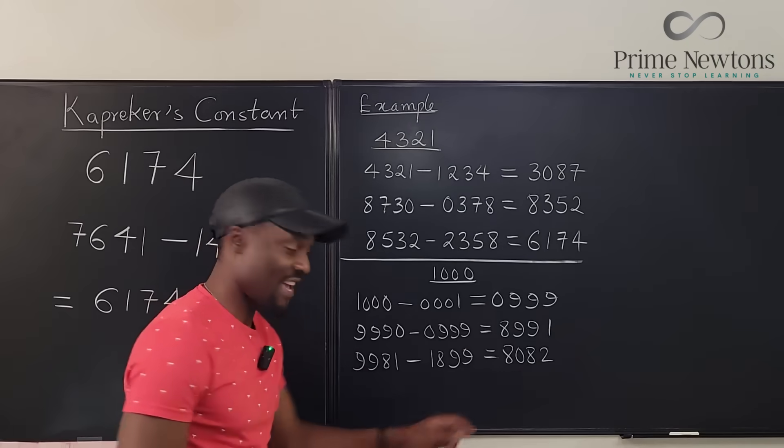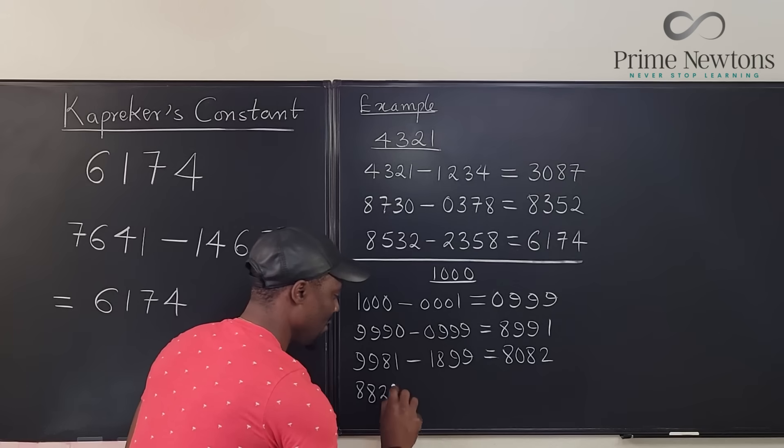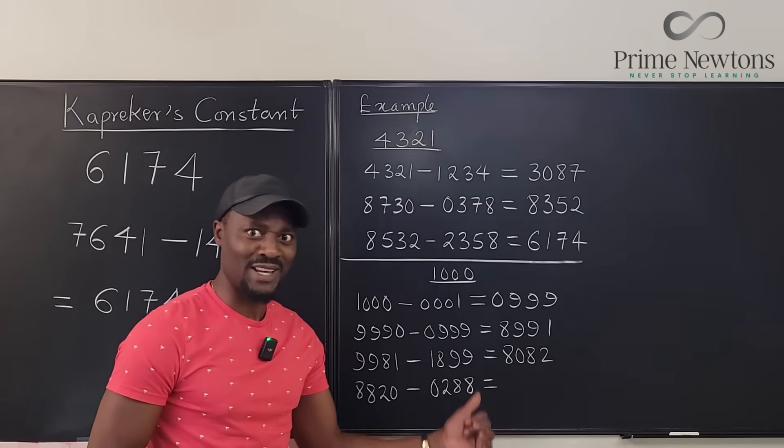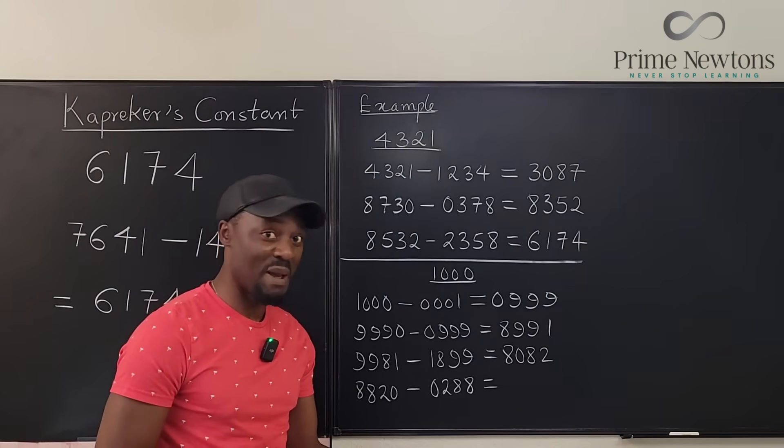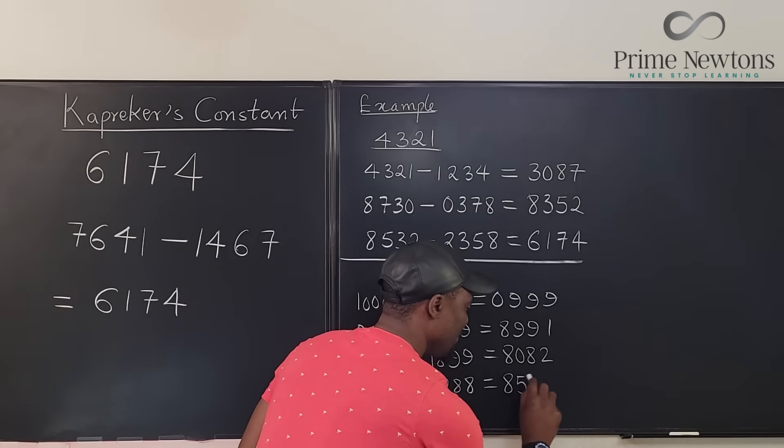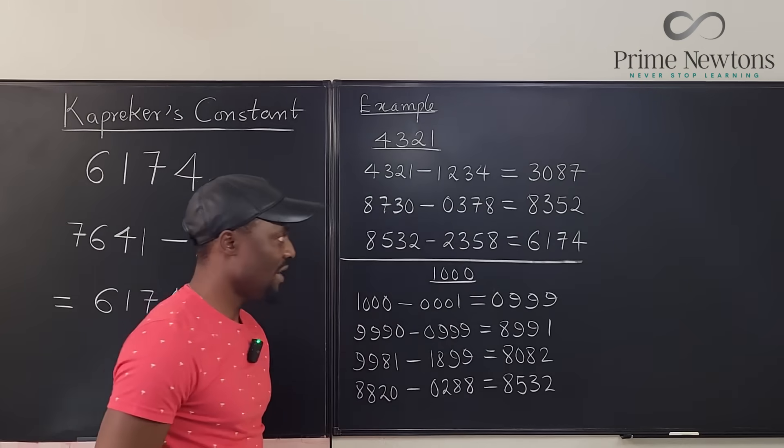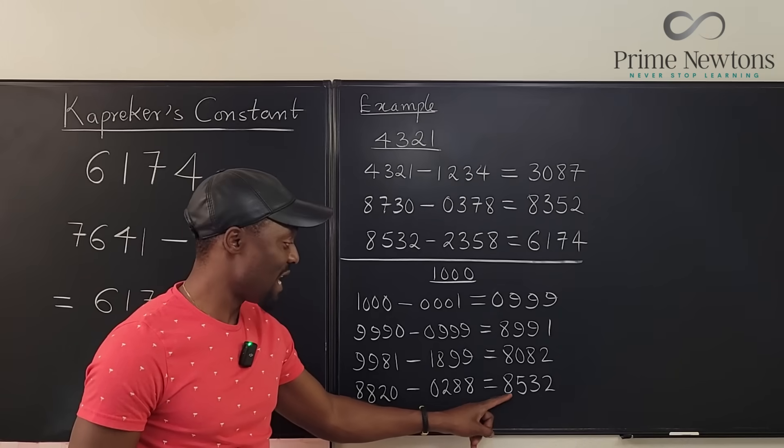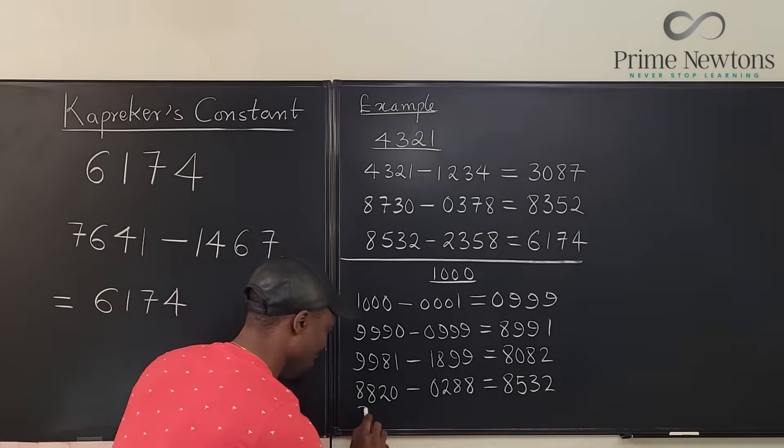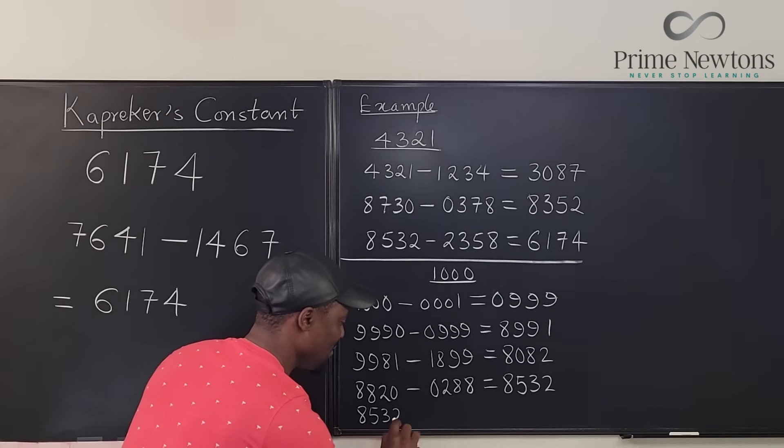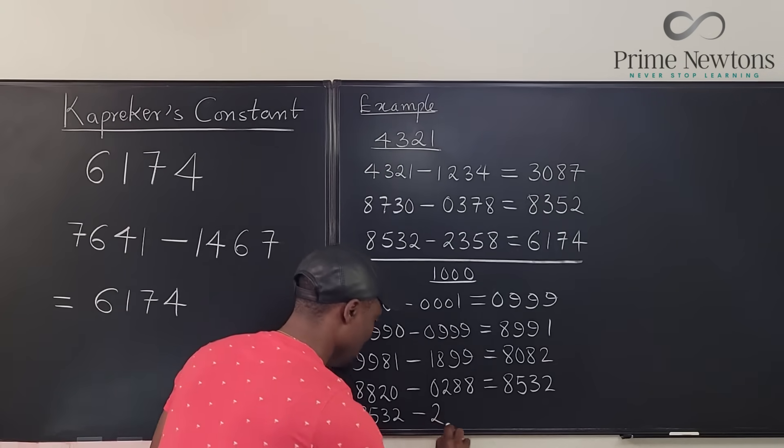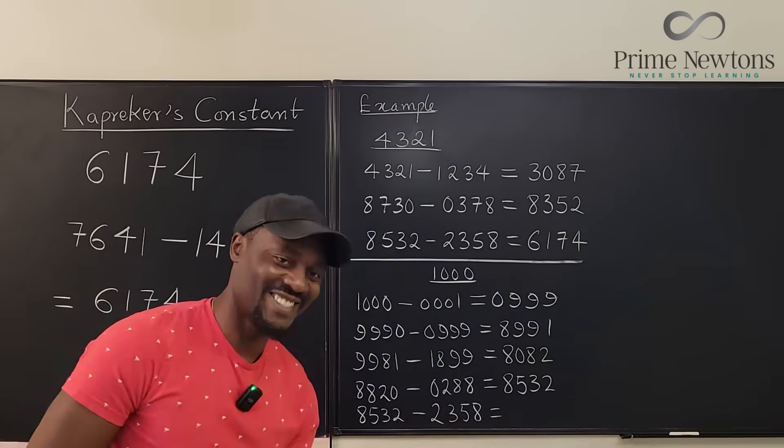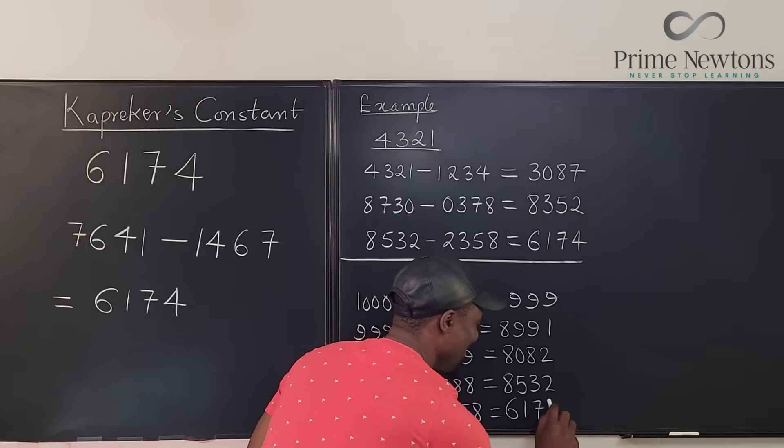If we rearrange this again, we're going to get 8,820 minus 0,288. This might take a longer process. Remember 7 is the maximum. 8,532. It looks like we still need to have more work to do. The biggest number we can get from here will be 8,532. Let's write it. 8,532 minus the smallest number is going to be 2,358. Let's see. It is 6,174.